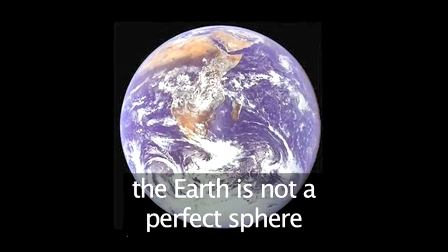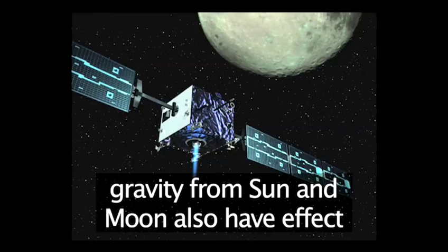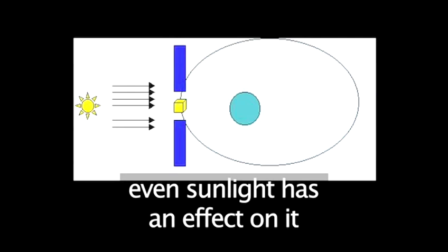But this causes problems because the Earth is not a perfect sphere. The gravity from the Sun and Moon also affect the satellite. Even the pressure of sunlight can affect it.